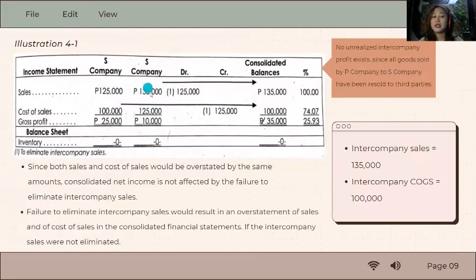The 135,000 sale by S to the outside doesn't need to be eliminated because it's an outside party. You only need to eliminate what's inside the group. No unrealized intercompany profit. There's no unrealized because 100% of what was purchased was sold.